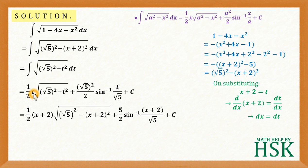On replacing the value of t as x plus 2, I'm going to obtain 1 by 2 times x plus 2 into square root of root 5 squared minus x plus 2 whole squared plus 5 by 2 into sine inverse of x plus 2 upon root 5 plus c. This is my required answer.